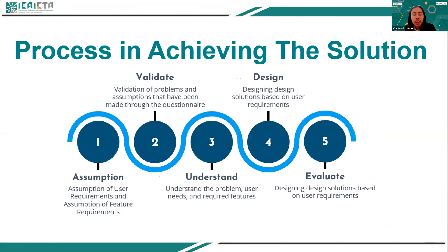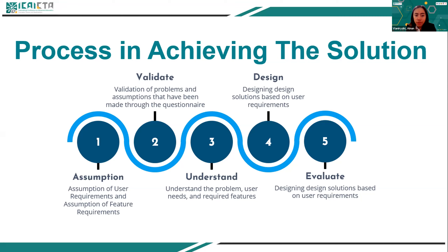Here are the processes done in achieving the solution in this paper. We first start from assumptions of user requirements and feature requirements. Then we go to validation done through a questionnaire. After the questionnaire, we try to understand the real problems, user needs, and required features. After that, we design the solutions, and for each design we evaluate. Finally, after evaluation, the design that meets user needs is produced.